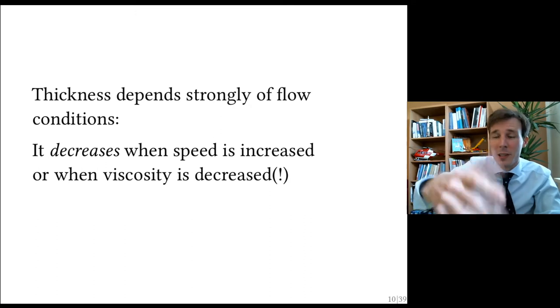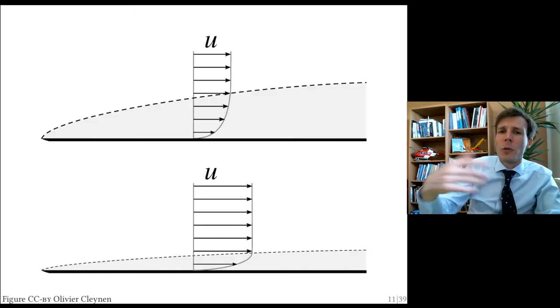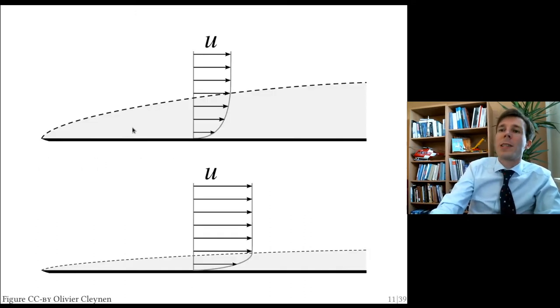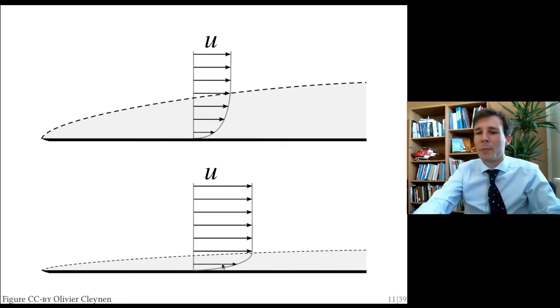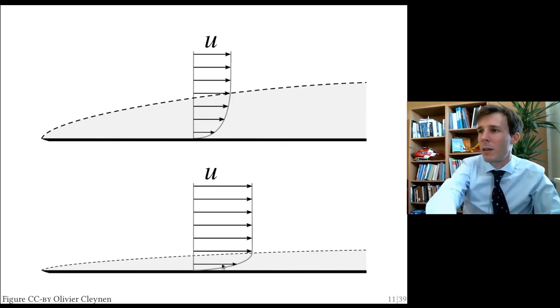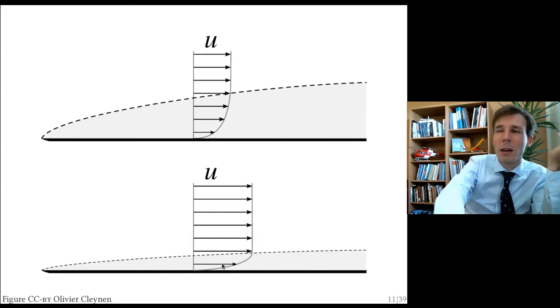Viscosity has the opposite effect. So to represent this, a very slow flow has a thick boundary layer. A very fast flow or a very low viscosity flow will have a thin boundary layer over here. And we learn to quantify this later on. This is the main concept to remember.